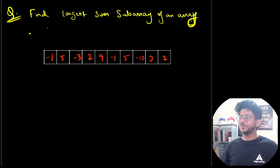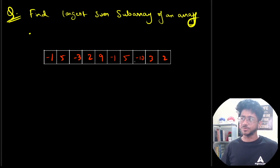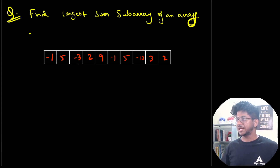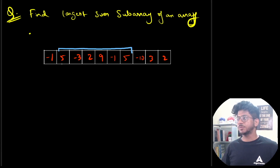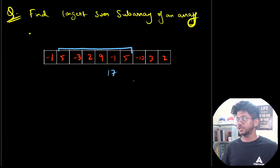Find the maximum sum subarray — you have to choose a subarray out of the array that has the maximum sum. For example, you can take a subarray with five plus minus three, which is two plus two equal to four, plus nine is thirteen, minus one is twelve, plus seven is seventeen. So this subarray is going to have a sum of 17 in total.